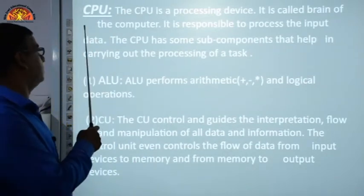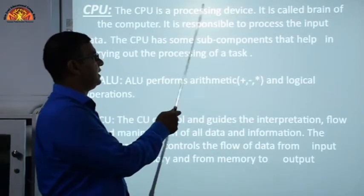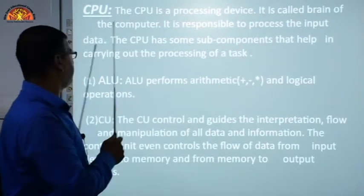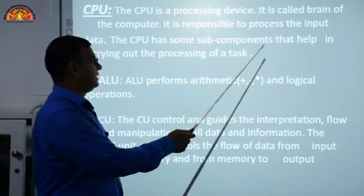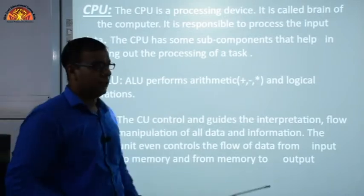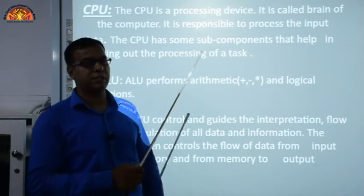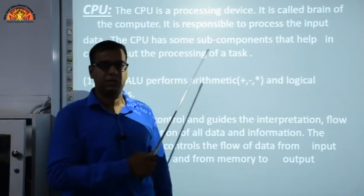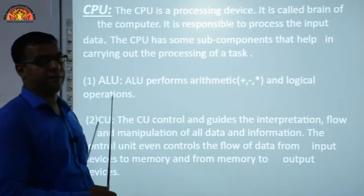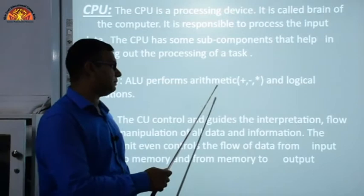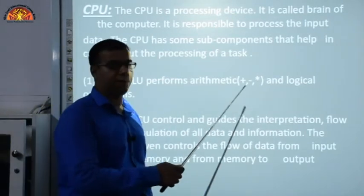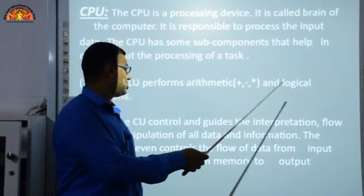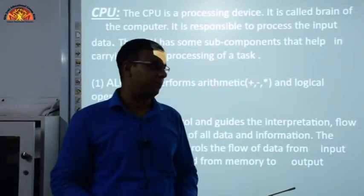Next is the CPU — Central Processing Unit. The CPU is a processing device and is called the brain of the computer. It is responsible for processing input data. The CPU has sub-components: ALU (Arithmetic and Logical Unit) performs arithmetic operations like addition, subtraction, and division, and logical operations like AND, OR, NOT. The Control Unit (CU) controls and guides the interpretation, flow, and manipulation of all data and information, including the flow of data from input devices to memory and from memory to output devices.